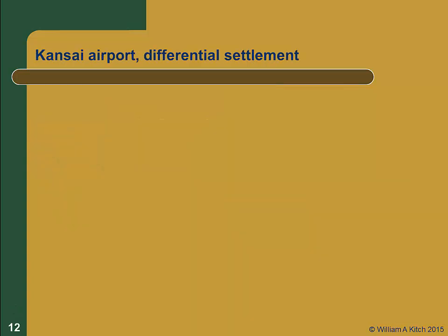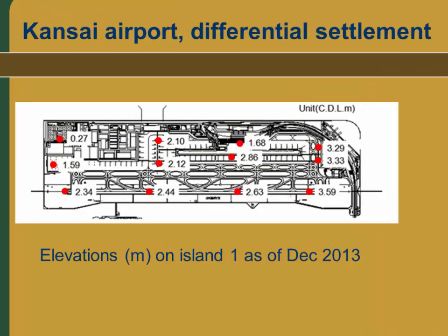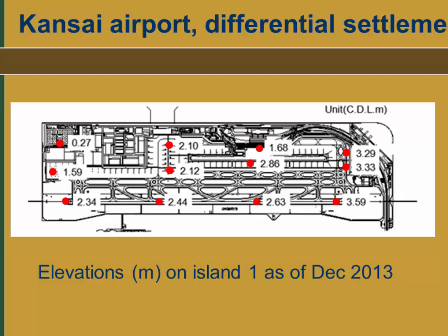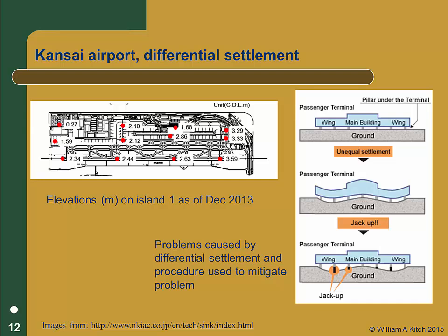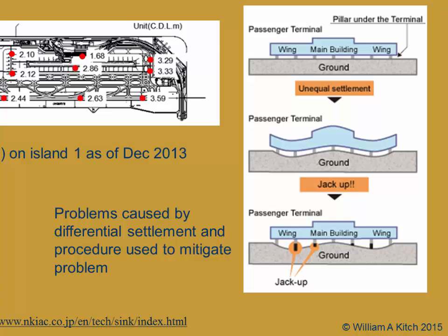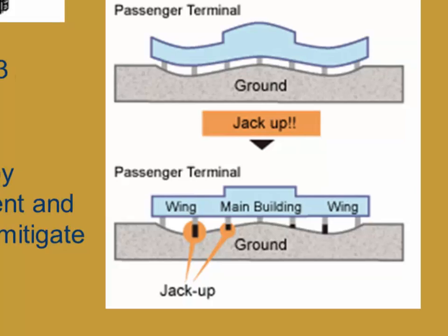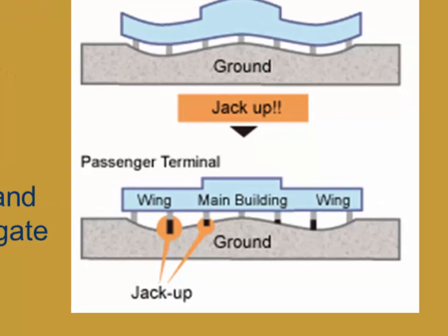In addition to the overall magnitude of settlement, the island has experienced differential settlement. This figure shows the elevation of 12 monuments located in Island 1, with elevations ranging from 0.27 to 3.59 meters. Differential settlements were anticipated, and the designers took several measures to reduce their impact. For example, the runways were constructed with asphalt pavement rather than concrete pavement, because asphalt is much less susceptible to cracking under differential settlement. One of the major concerns related to differential settlement was the large terminal building. Two measures were taken: first, the structure was founded on a single large mat foundation, which tends to reduce differential settlements. Second, and a more creative solution, involves the ability to jack up individual columns in the building to reduce differential settlement as it happens.